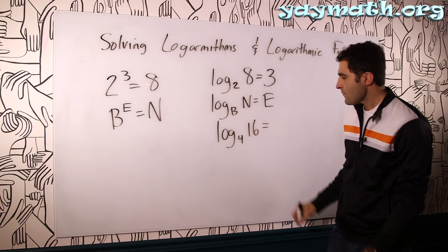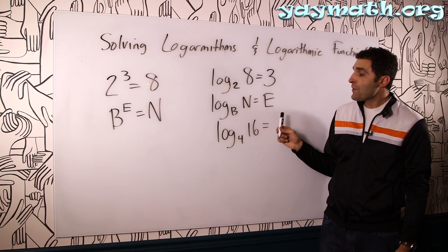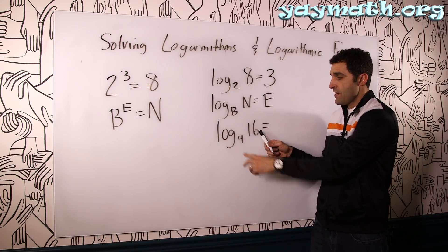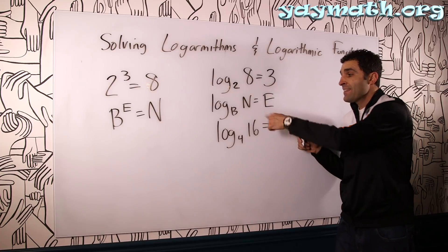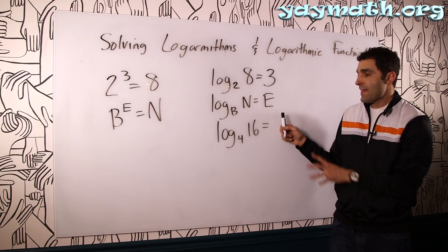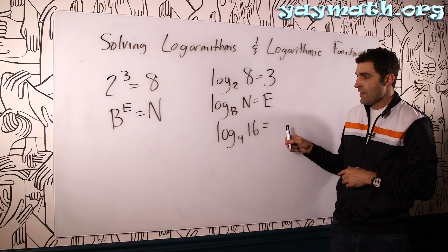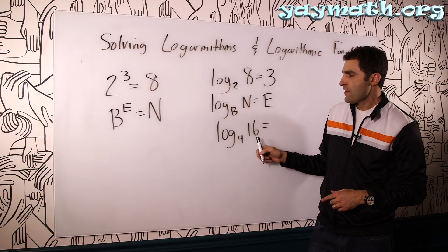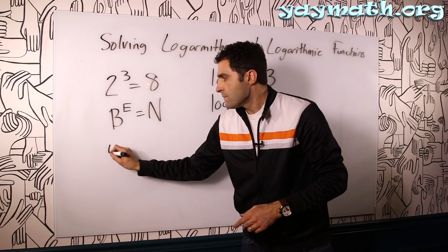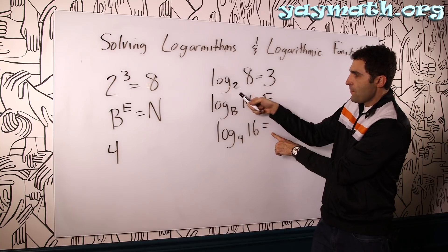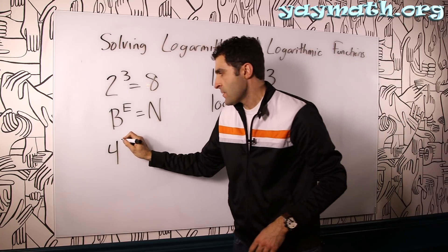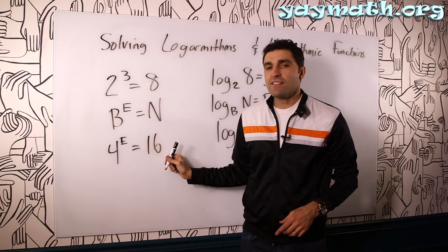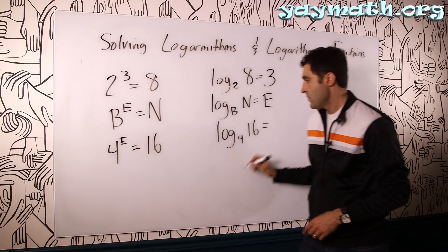What is log base 4 of 16? That would imply 4 to the what is 16. Some students, when they're starting out, actually like to write this in exponential form so that they can see what's happening, because they're more comfortable with exponents coming into this chapter. Which is fine. Let's try that once. So this is the base, 4. 4 to the something, which we're missing, which we have over here. We can call it e. Why not? 4 to the e equals 16. 4 to the what is 16? 2. There you go.